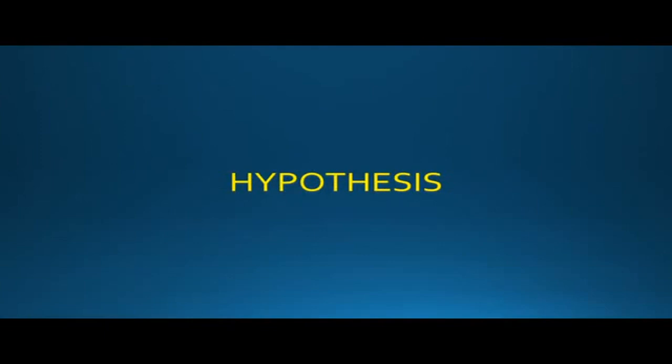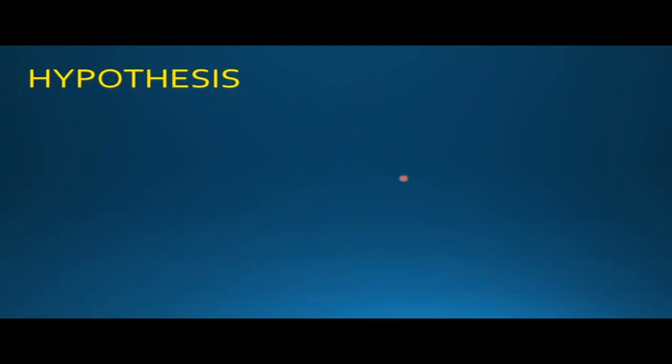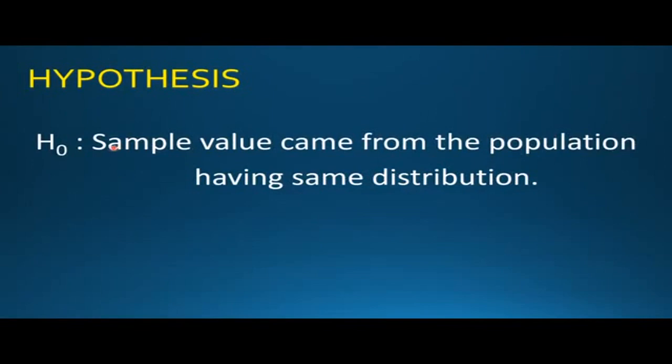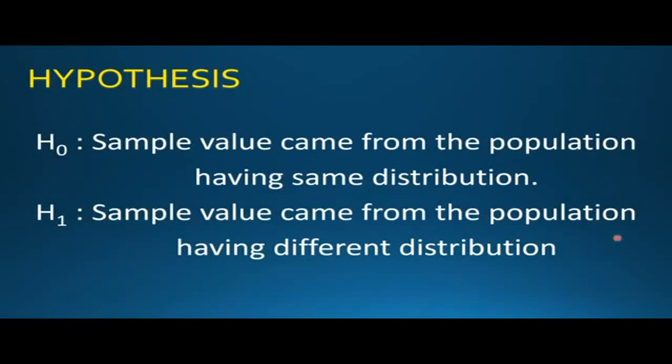Then if we talk about the hypothesis, we all know that there are two types of hypothesis: null hypothesis and alternative hypothesis. So here in this test the null hypothesis is if the sample came from the population having same distribution, and the alternative hypothesis is if the sample came from the population having different distribution.